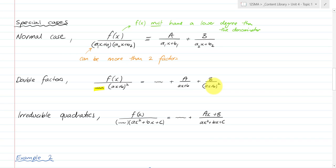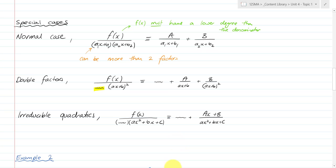For an irreducible quadratic — these are ones that can't be factorised — if we have f(x) over something times an irreducible quadratic, then this is identical to all the other terms like normal, but then we get a linear numerator over that irreducible quadratic, and we deal with it that way.